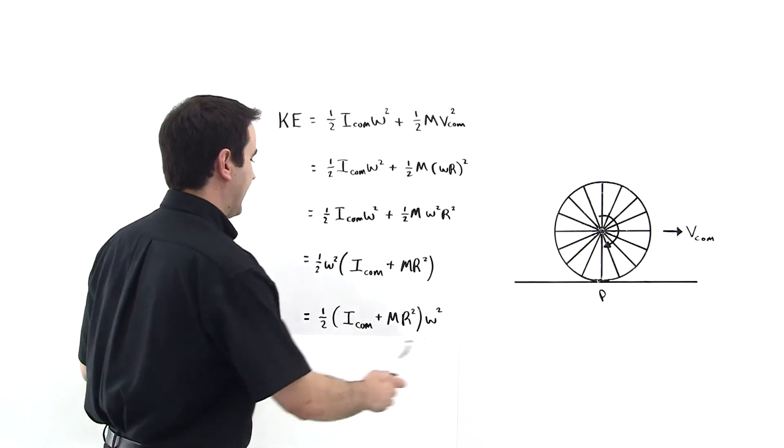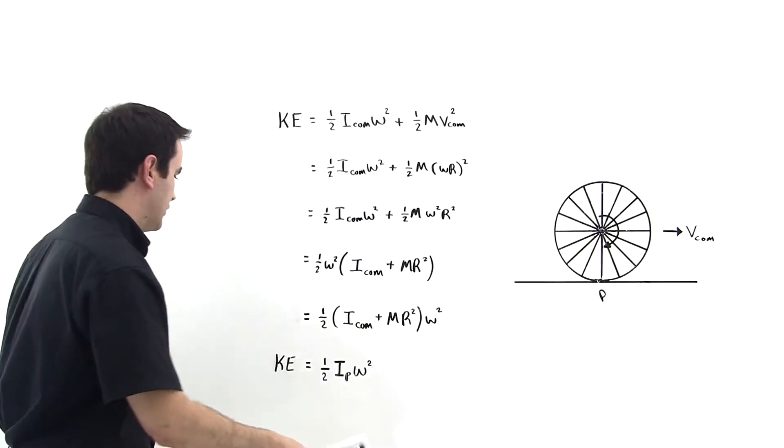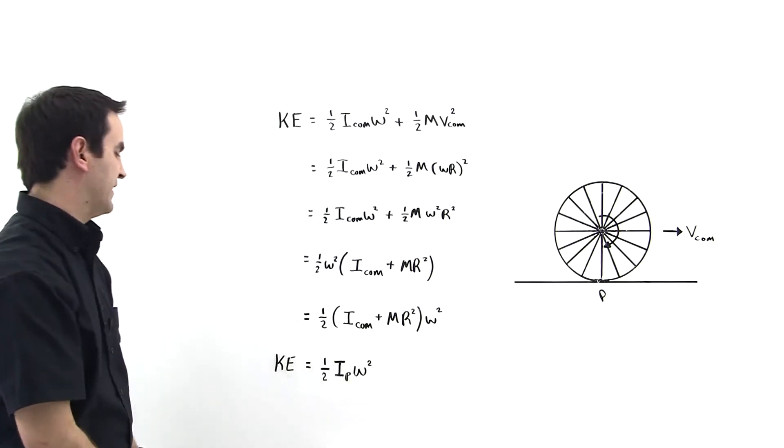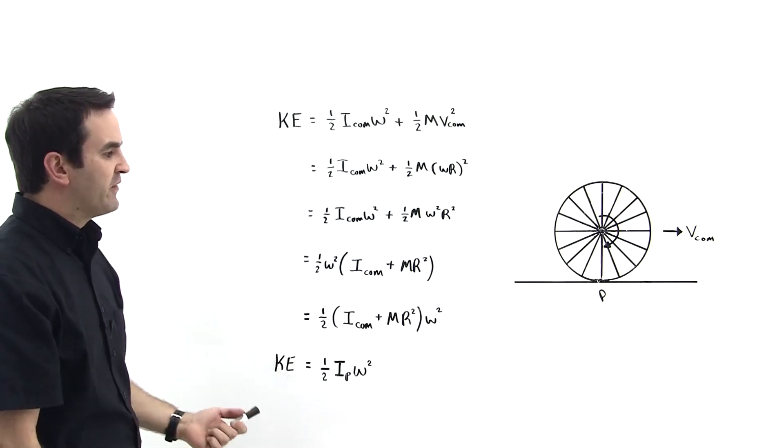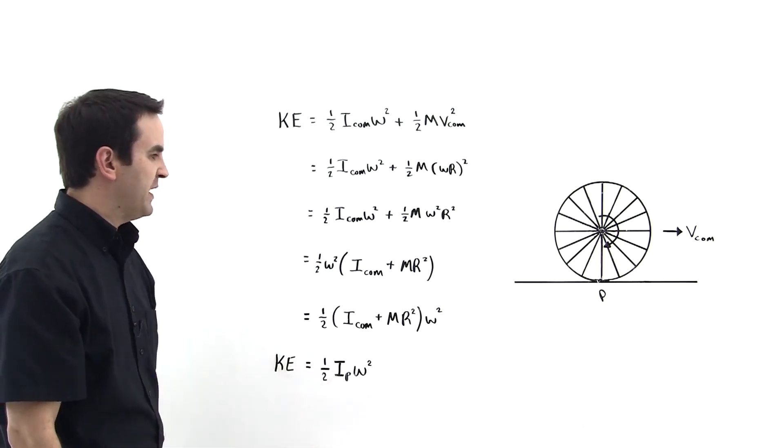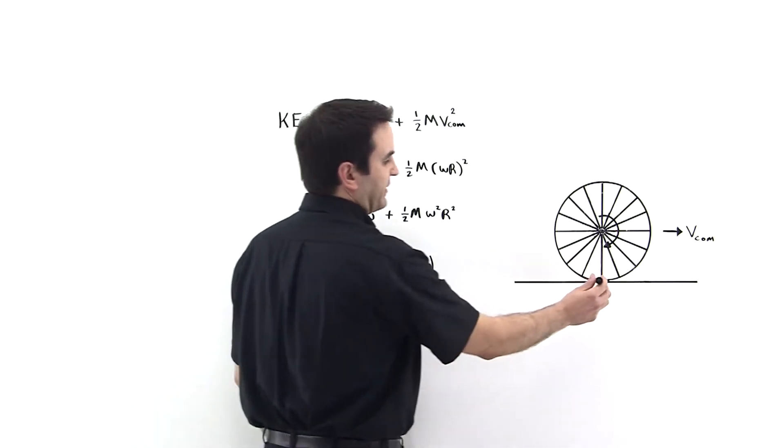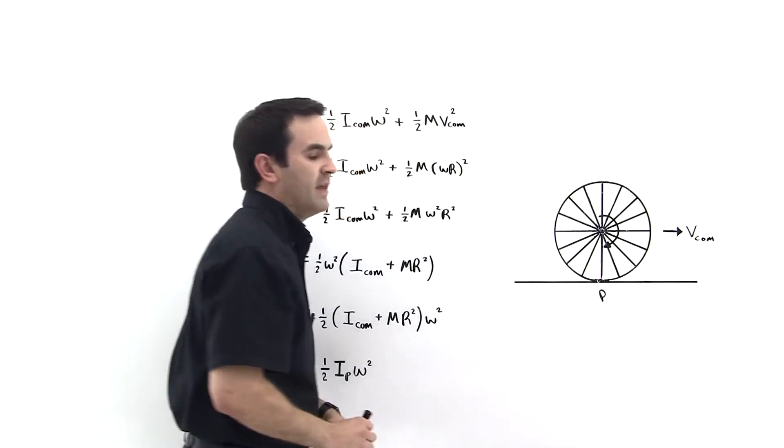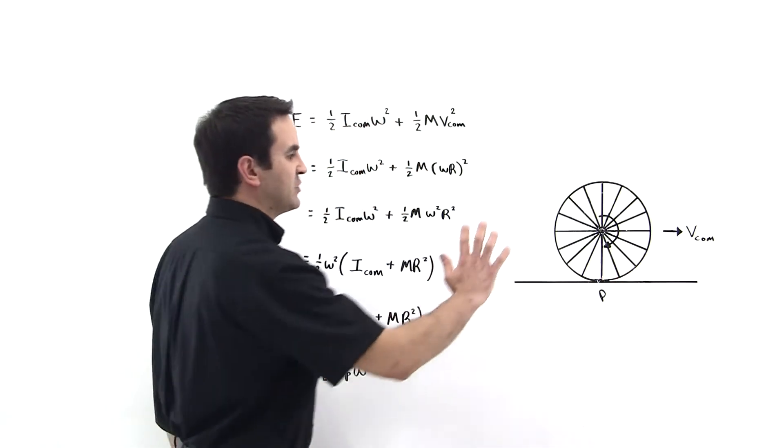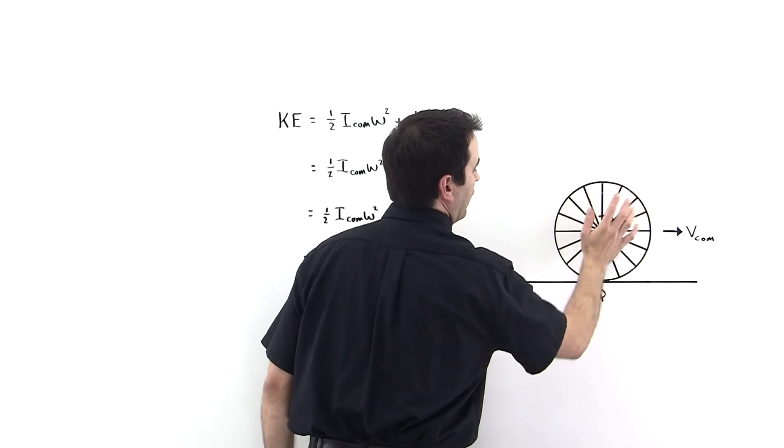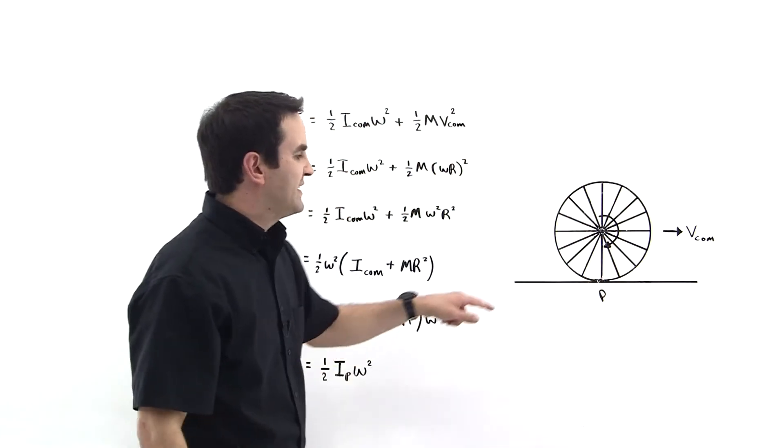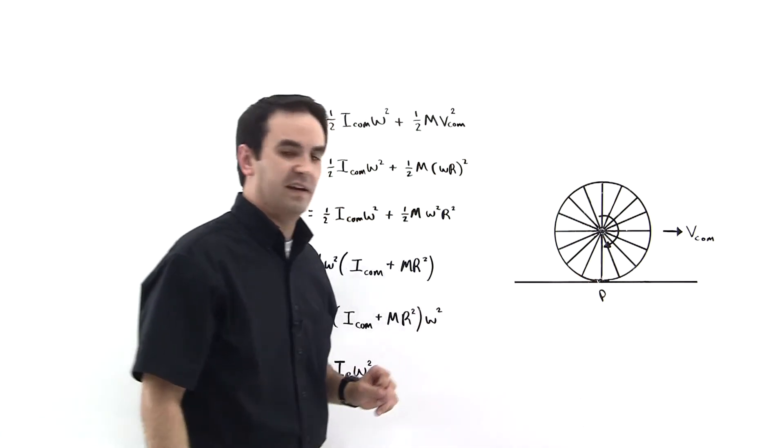And so we can say that the kinetic energy of a wheel is equal to one half I subscript p omega squared. Well, the moment of inertia for I subscript p is the moment of inertia about this bottom point right here. We remember from rolling motion that this wheel is pivoting about that point right there, and that that point has an instantaneous zero velocity.